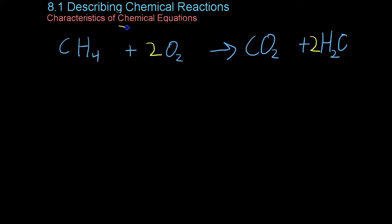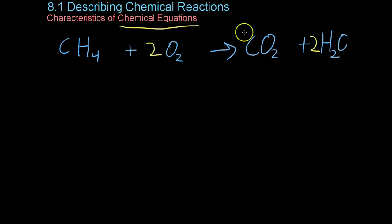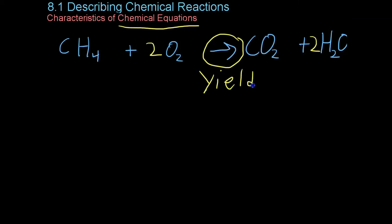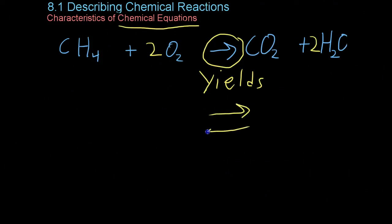Delving further into the syntax of chemical equations, we'll talk about some symbols. First of all, we've already covered this arrow symbol, which is yields. This is used to indicate the change in arrangement of atoms from the reactants to the products. Similarly, there is a symbol, which is a double arrow, which is used for reactions in which the products can then turn back into reactants.